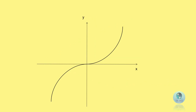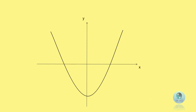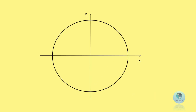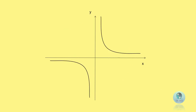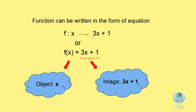Now, let's try this question. Function can be written in the form of equation. For example, f(x) equals to 3x plus 1. For this function, the object is x. The image is 3x plus 1.